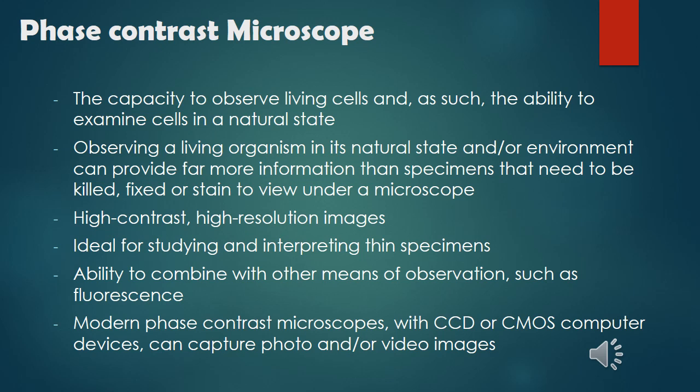The Phase Contrast Microscope has the capacity to observe living cells and, as such, the ability to examine cells in a natural state. Observing a living organism in its natural state and/or environment can provide far more information than specimens that need to be killed, fixed, or stained to view under a microscope. It offers high contrast, is ideal for studying thin specimens, and has the ability to combine with other means of observation such as fluorescence. Modern phase contrast microscopes with CCD or CMOS computer devices can capture photo and/or video images.